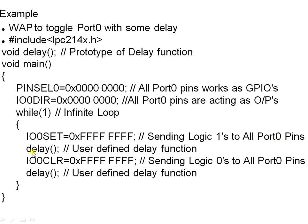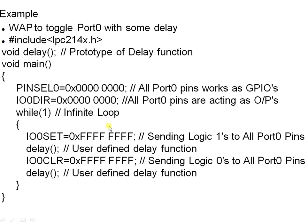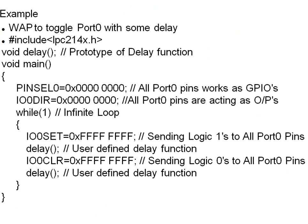The delay function is needed because our naked eye cannot detect voltage changes without a pause. We stop the voltage for a specific time using this delay. After the delay, we clear the pins with IOCLR, apply another delay, then set again — this infinite while(1) loop keeps toggling the LEDs. The delay prototype uses nested for loops: i from 0, and j from 0 to 50,000, making the toggling visible to the naked eye.